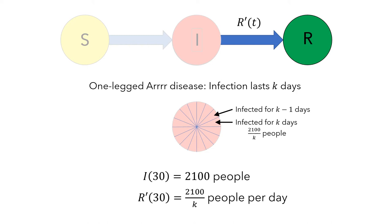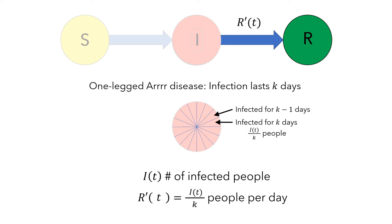And this works for other numbers of infected people. Since I(t) is the number of infected people, the number of infected people in each of these subgroups would be I(t) divided by k. And this would be true for any number of days, not just on day 30. So this gives us a rate equation for R'(t).